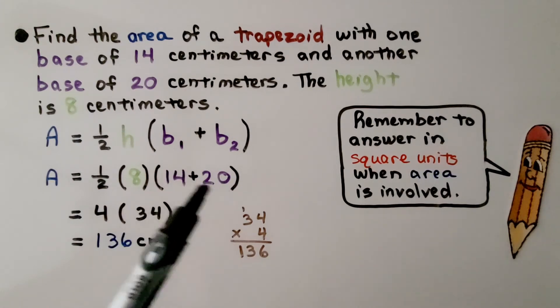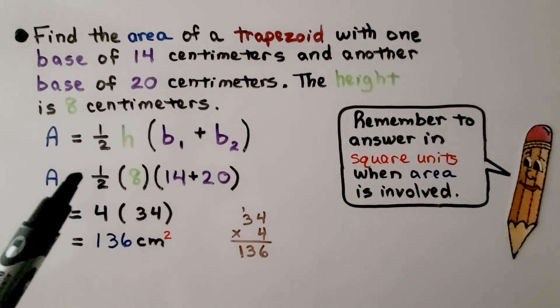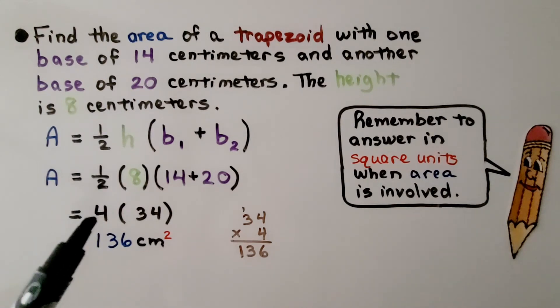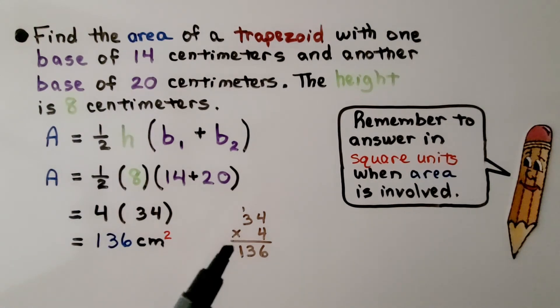We add 14 plus 20, which is 34. And half times 8, half of 8 is 4. Now we have 4 times 34. We can do a little math on the side. On scratch paper, we get 136.